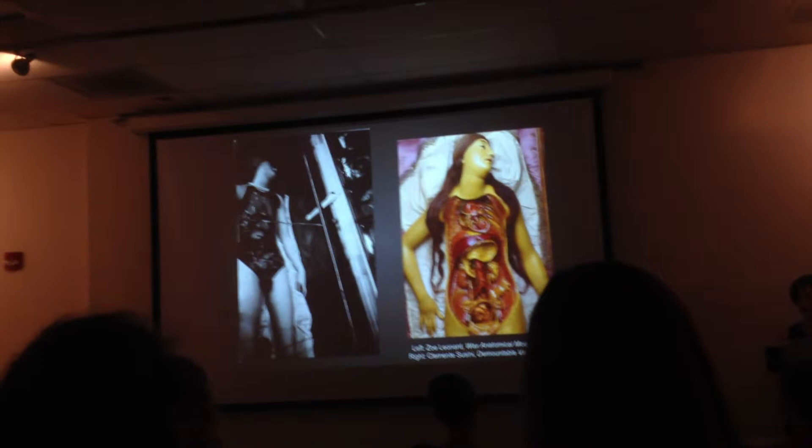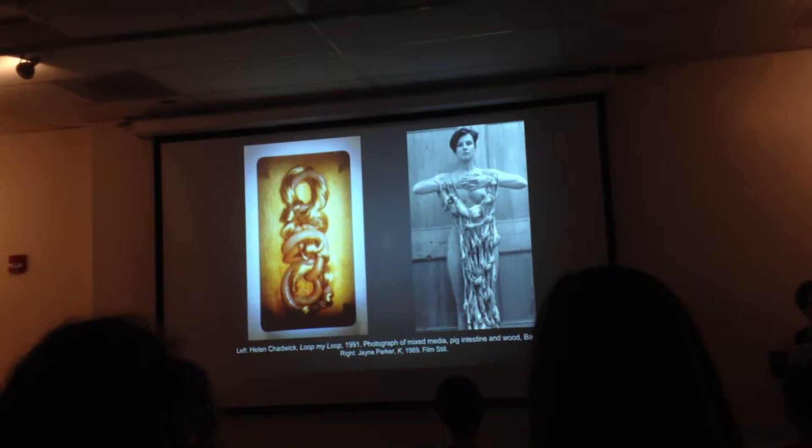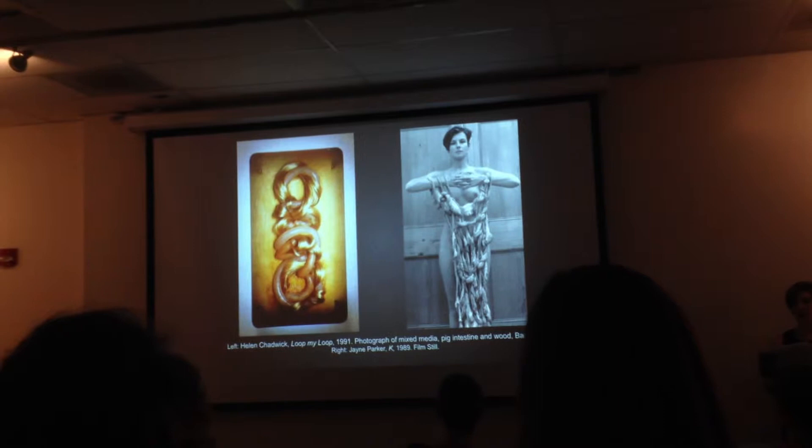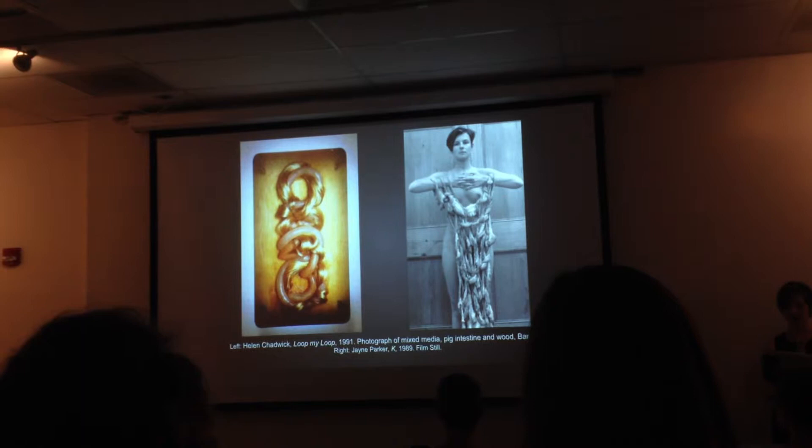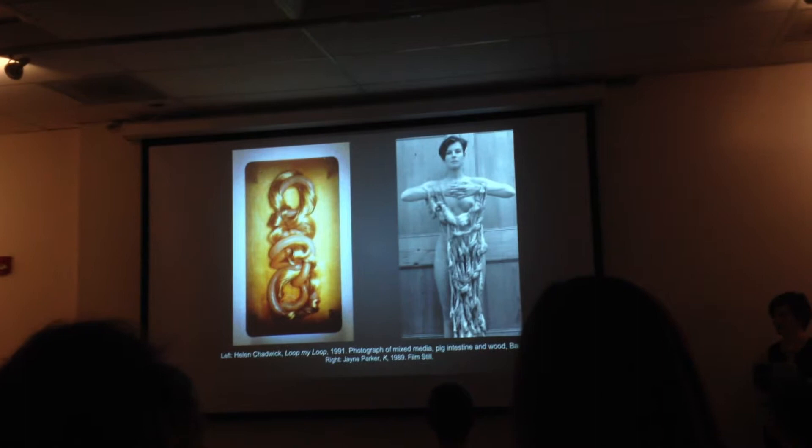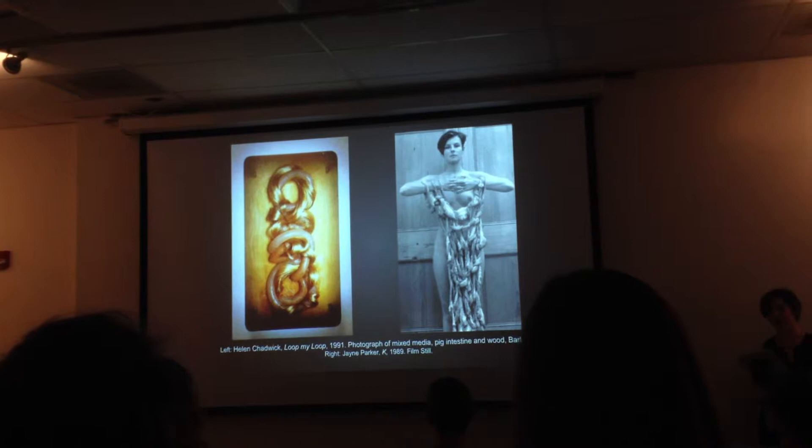The boundaries between interior and exterior become very important when dealing with the female form. While the exterior is something to be objectified, the interior of the body can be a source of visceral horror. Leonard's contemporaries in the feminist art scene of the early 1990s exploited this notion to display their own medical and bodily autonomy. In her 1991 piece Loop by Loop, Helen Chadwick braids pig intestine with glistening Barbie hair, creating a contrast that is both beautiful and repulsive, a comment on the commodification of women.